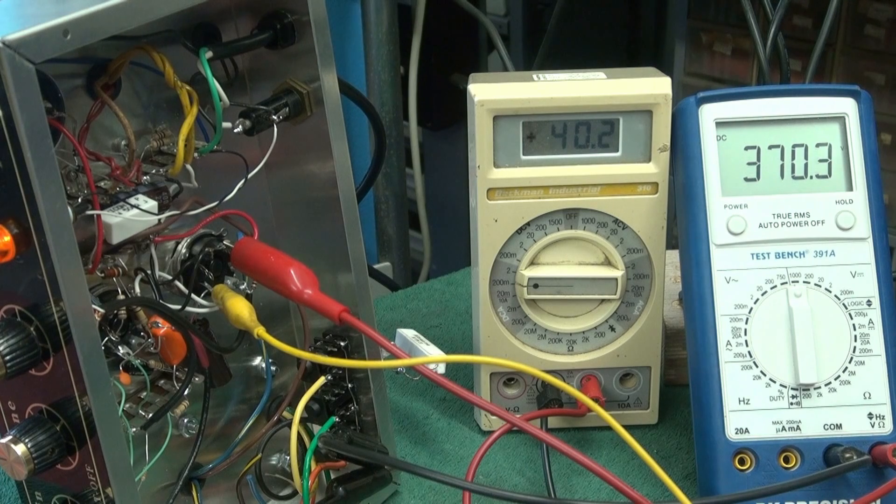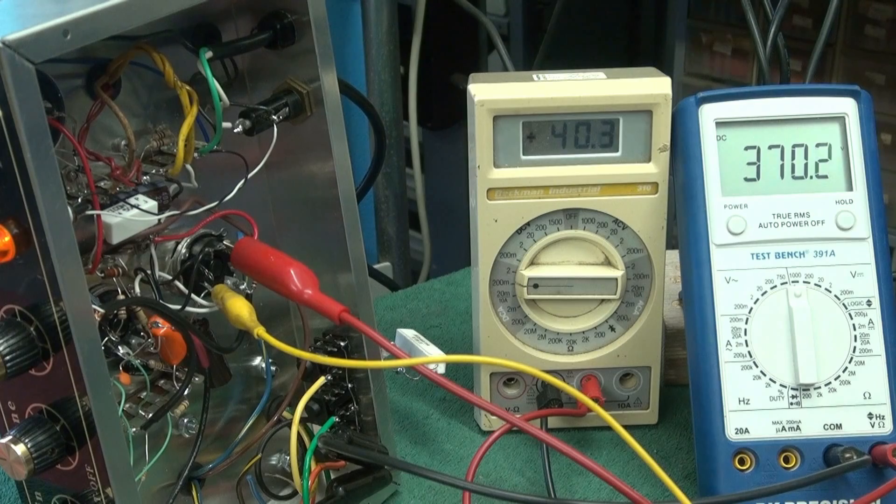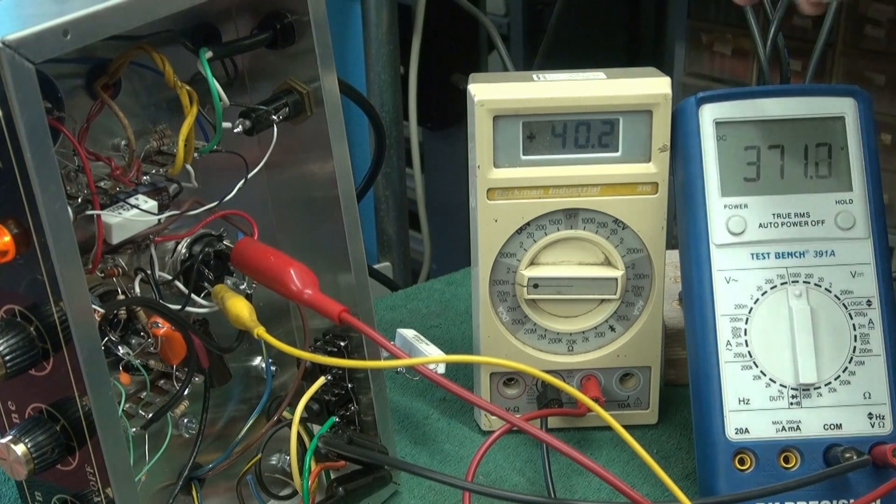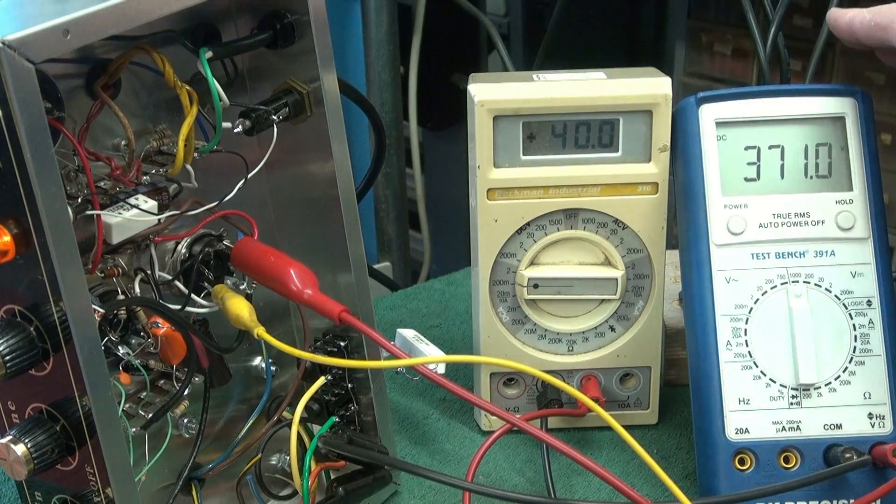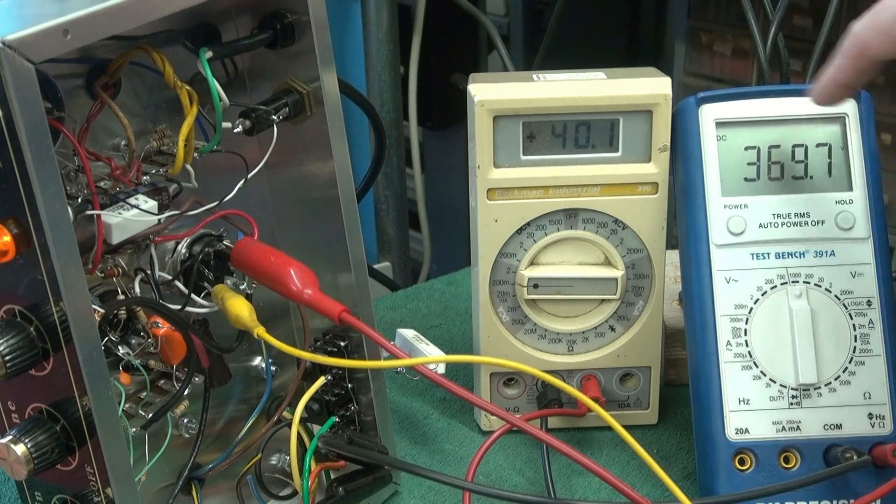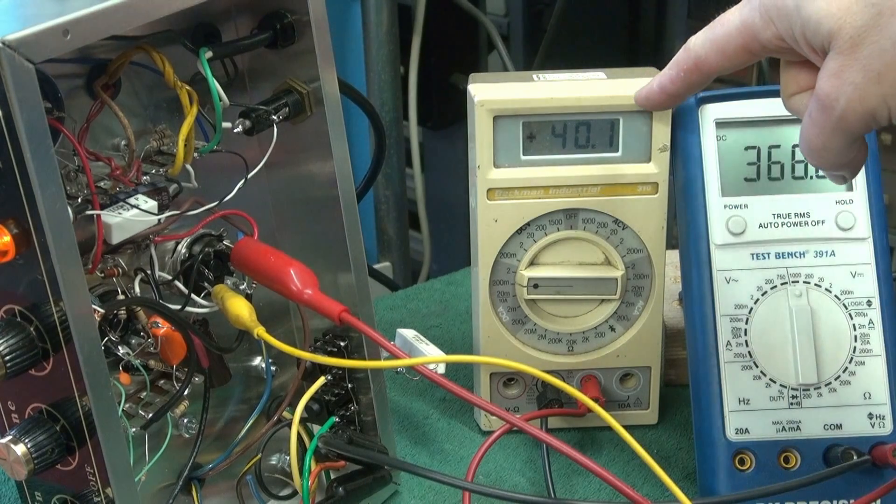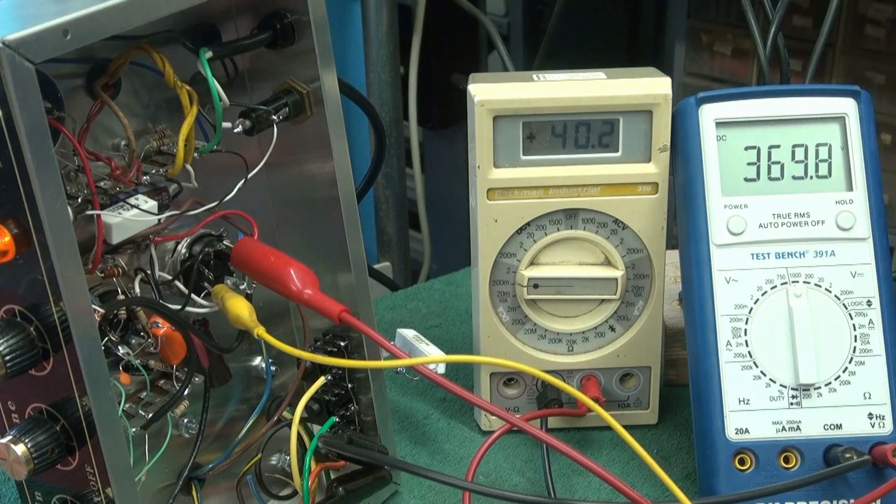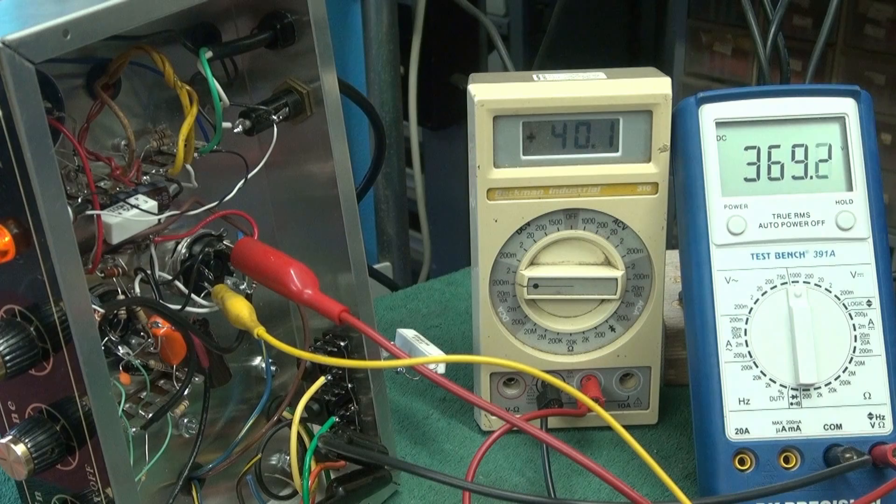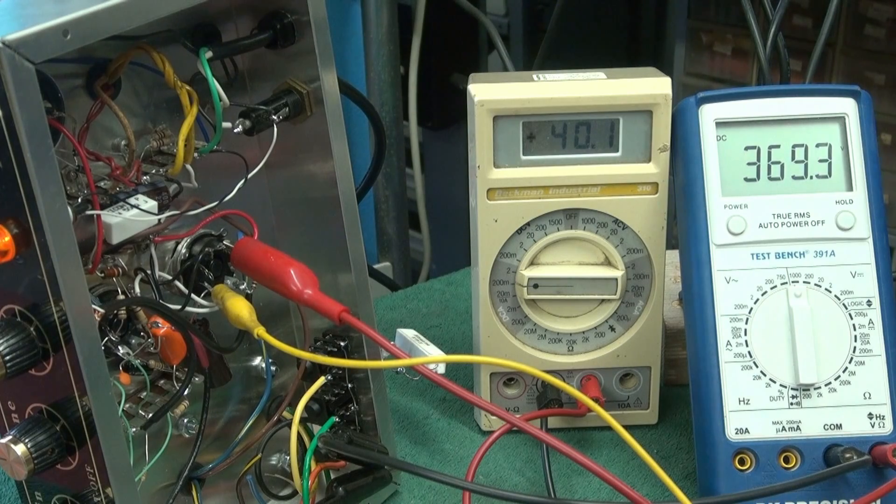So in a second here let me put around the scope for you. You can see what the output looks like. But this is probably the best way to set your bias, because not only do you monitor the current, you're also looking at your plate voltage so you can calculate wattage directly. It's simply that current times that voltage to calculate the current and the wattage through that output tube.